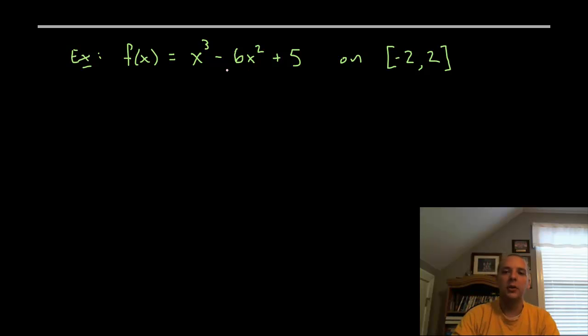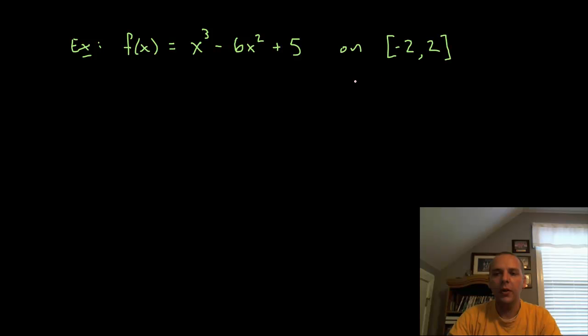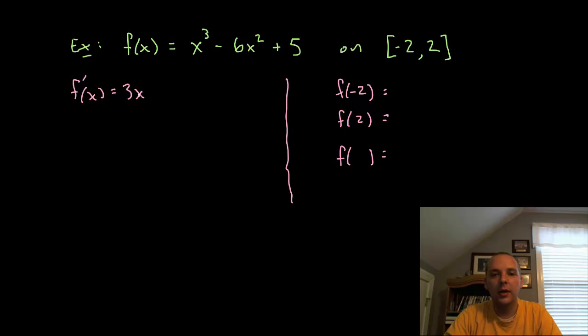Now let's try one real quick with a small example here. I have this function, f of x equals x cubed minus 6x squared plus 5, defined on the interval minus two to two. So I know at some point I'm going to try f of negative two and I'm going to try f of two. But I also need to try f of any critical points if there are any. I'll take the derivative, get 3x squared minus 12x.